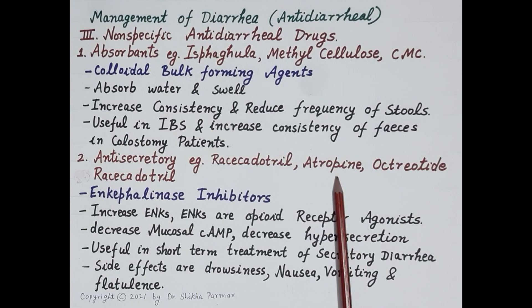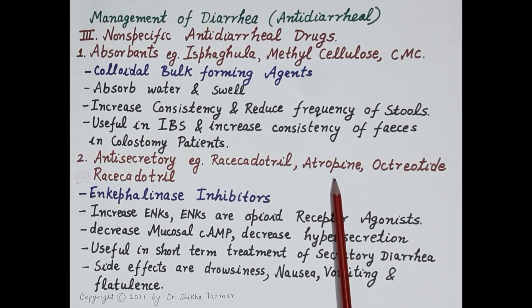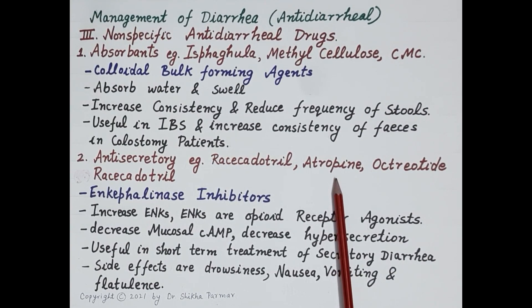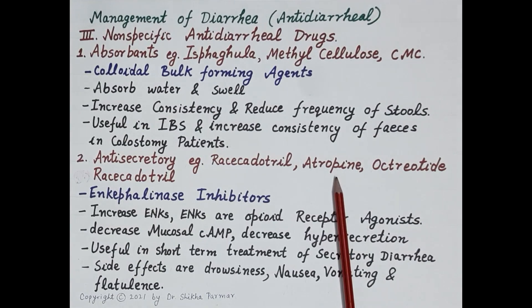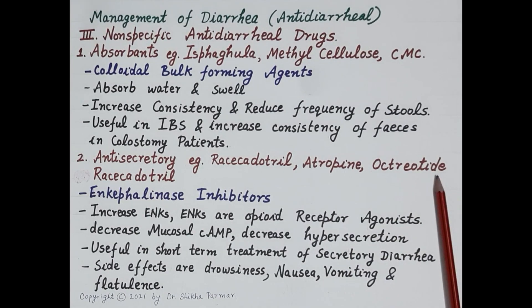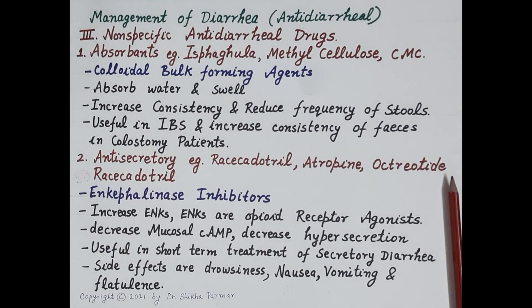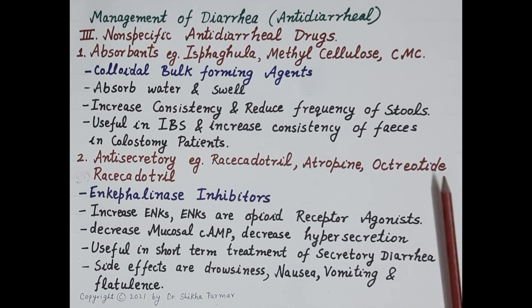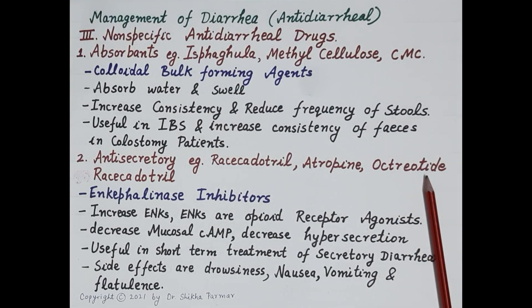Atropine reduces motility by virtue of its anticholinergic effect and also reduces secretion. It may provide relief in drug-induced diarrhea, such as diarrhea induced by neostigmine or metoclopramide, and also provides symptomatic relief in dysenteries and diverticulitis. Octreotide is a somatostatin analogue and is a very potent antisecretory and antimotility agent. It is used in refractory diarrheas — for example, diarrhea in AIDS patients — and to control diarrhea in carcinoid and vasoactive intestinal peptide-secreting tumors. Octreotide is administered by subcutaneous injection.